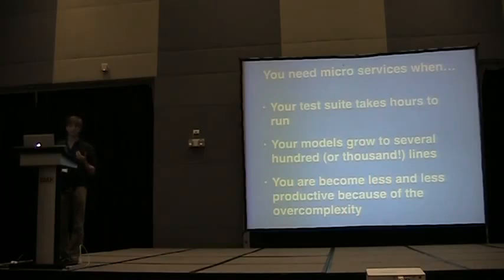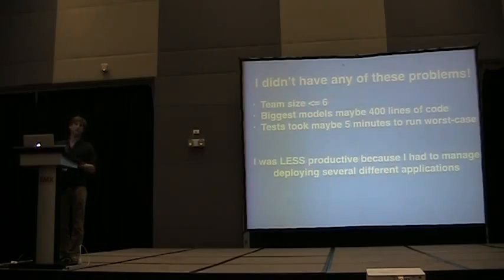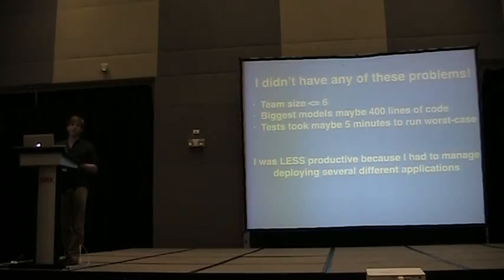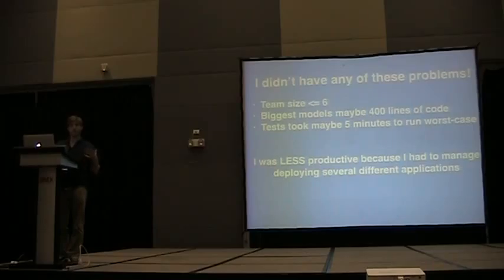But the thing is, with my team we didn't have any of these problems. We were a team size of less than six people. Our biggest models were like 400 lines of code. Our tests only took five minutes or less to run. But I was less productive because I had to manage deployment for all these different applications and manage all these different API endpoints. So I was wondering why in the beginning we had to create this very complex design.